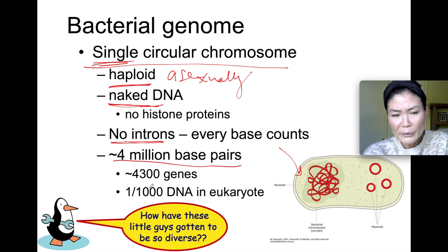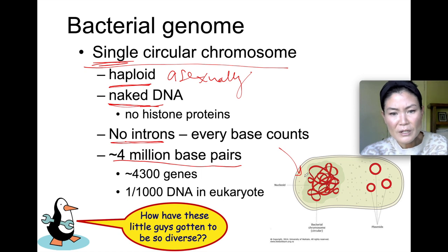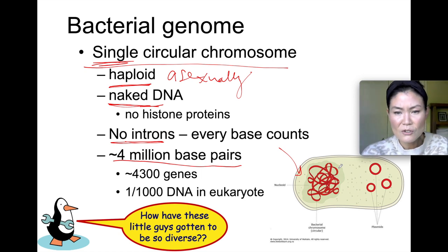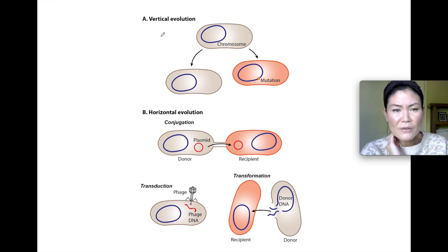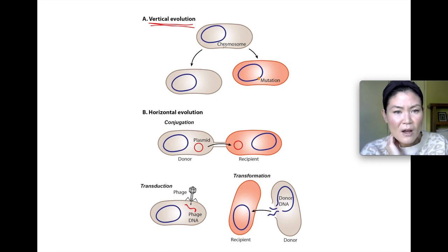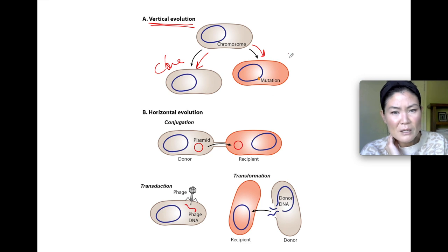If bacteria are so simple, how have they become so diverse? If all their nucleotides code for a protein, a mutation in one nucleotide leads to a new strain of bacteria. There are a few ways bacteria can evolve and change over time. There's vertical evolution, where a bacteria divides into one that is just like it — a clone — and then maybe there's a mutation in the other cell, creating a new strain with a different genome.